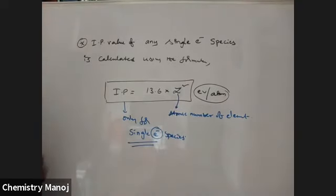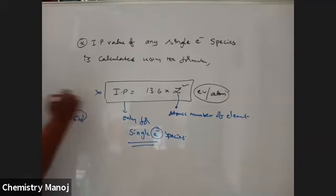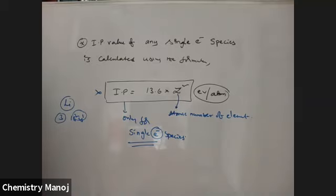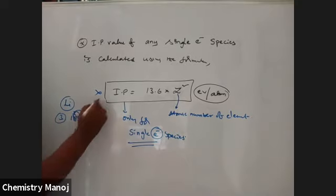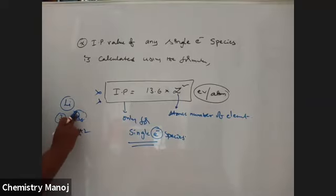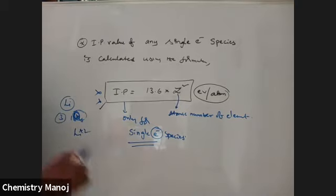For example, lithium (1s²2s¹) has 3 electrons — not a single electron species, so the formula is not applicable. Li⁺ has 2 electrons — still not applicable. Li²⁺ has 1 electron — applicable. He⁺ has 1s¹ — a single electron species, so applicable. The formula IP = 13.6Z² applies only to single electron species like H, He⁺, Li²⁺, etc.